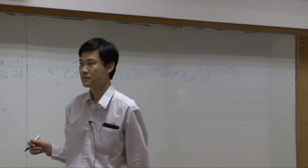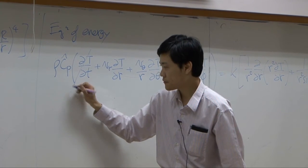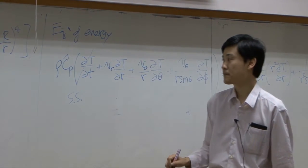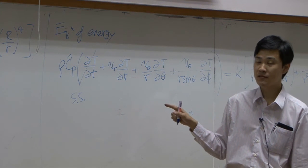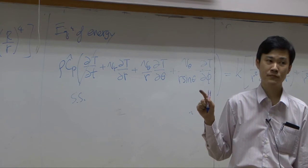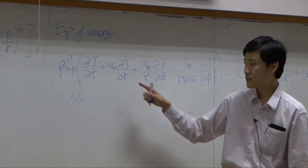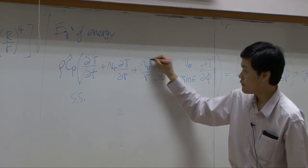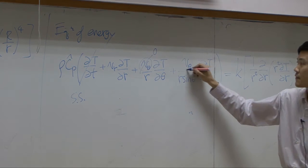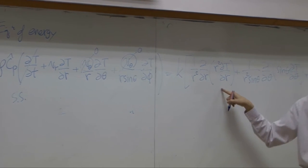So let's start dropping terms. The first term is zero by the steady state assumption. For the second term, does temperature change with respect to R? It does, so this term must be kept. Velocity V_theta is zero, so that term drops. T is a function of R, so this term must be kept.